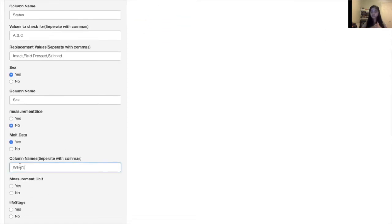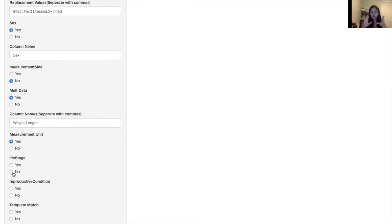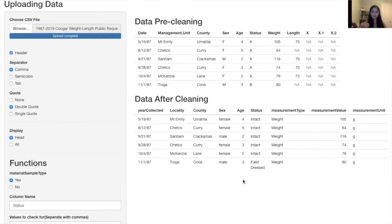And once you've selected all of that, your finalized, finished, clean data set will show up under data after cleaning. You can change the way you want to view this data frame, whether you want to view the full data frame or only the first six rows or so by selecting either head or all under the display category. Thank you.